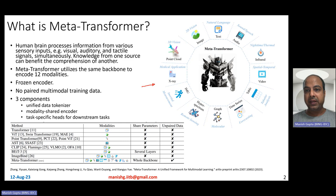Those 12 modalities are: image, text, audio, infrared images, videos, table, time series, graph, hyperspectral images, IMU (inertial measurement unit) based readings, X-ray images, and point clouds. All of these 12 modalities are combined together in a single transformer encoder model called Meta Transformer.